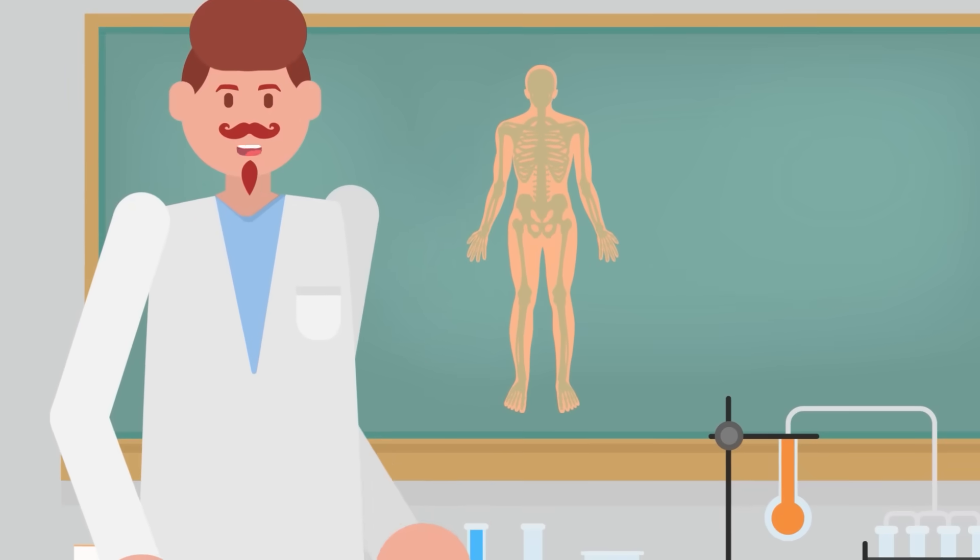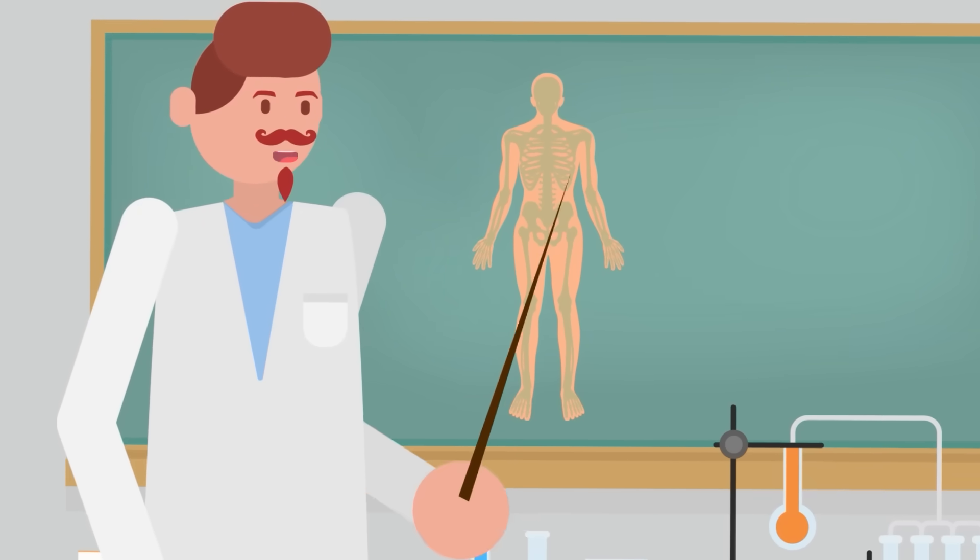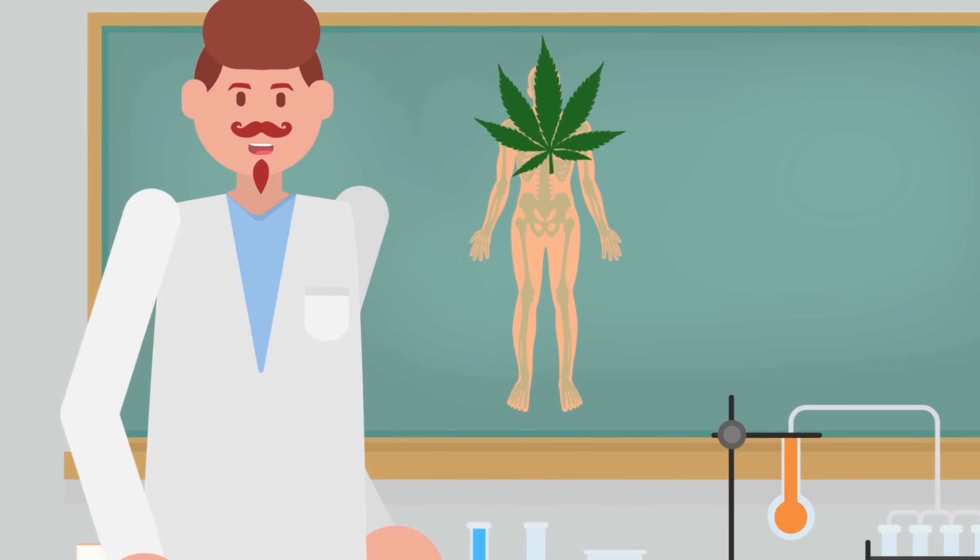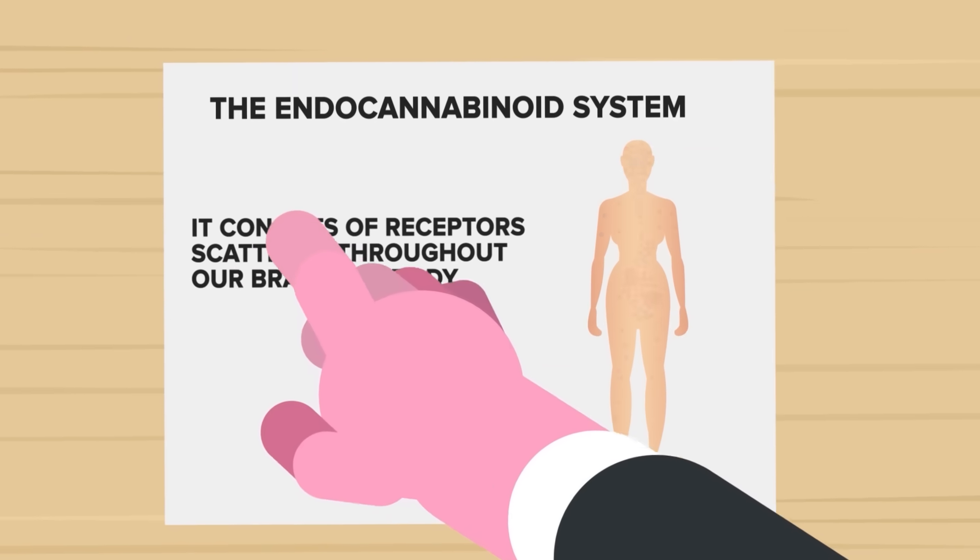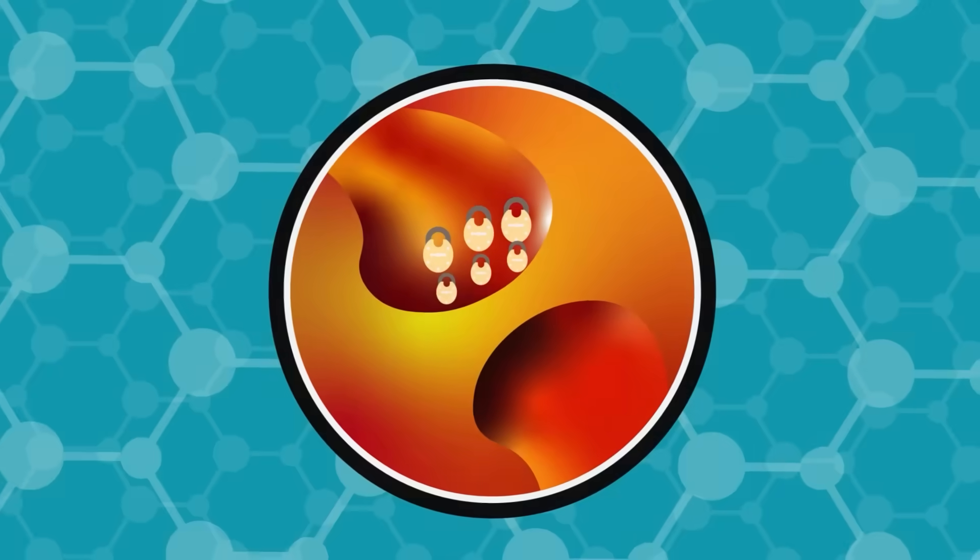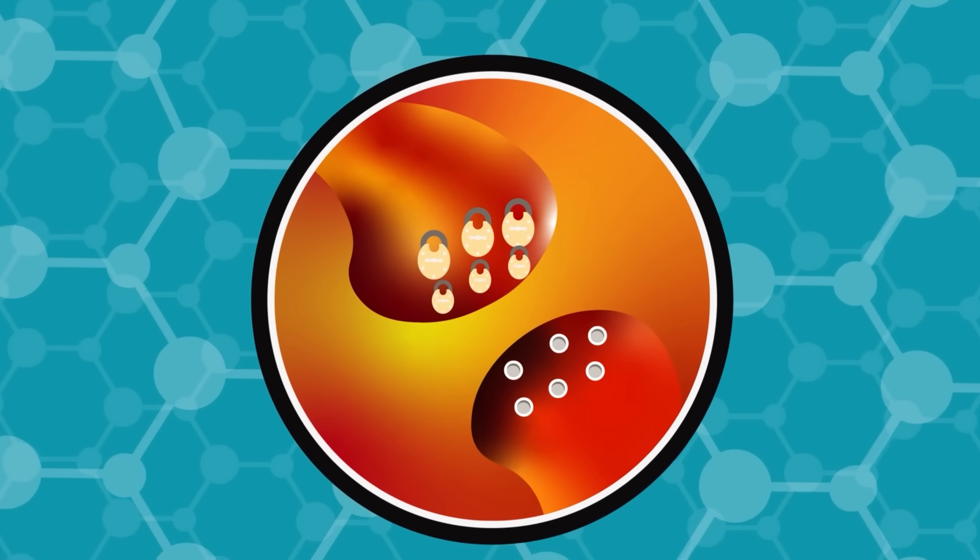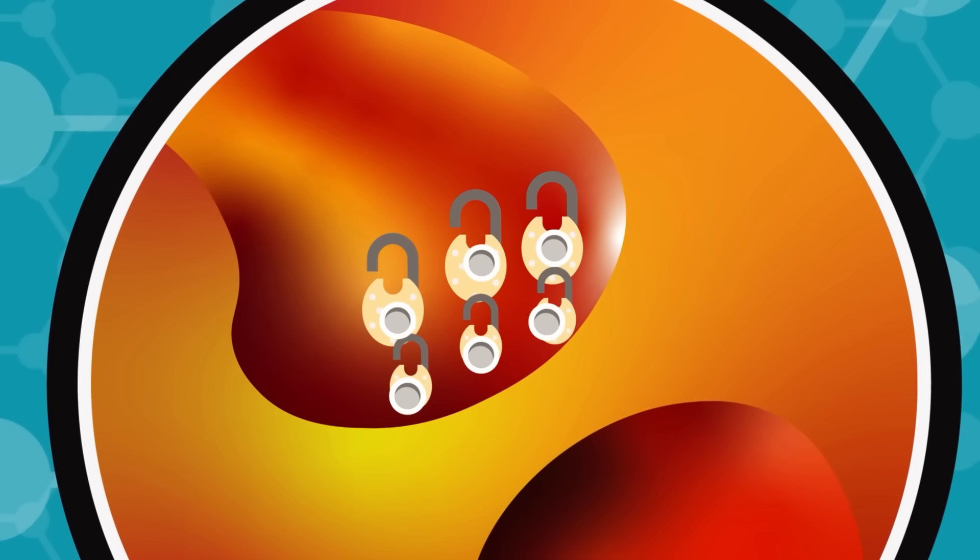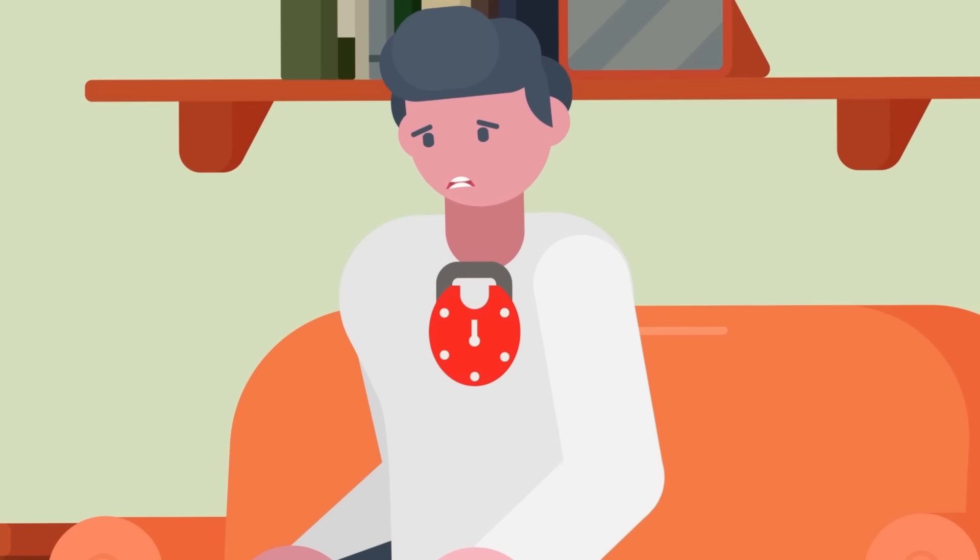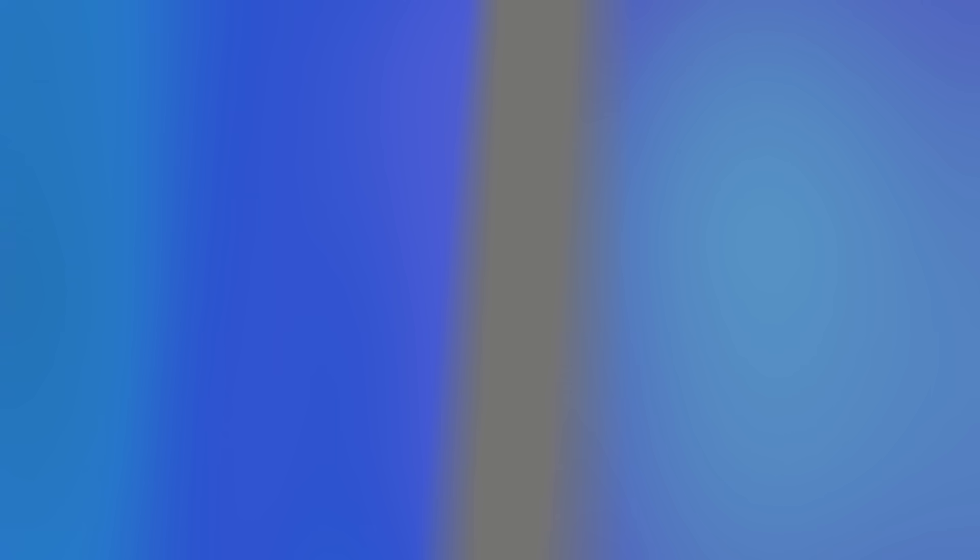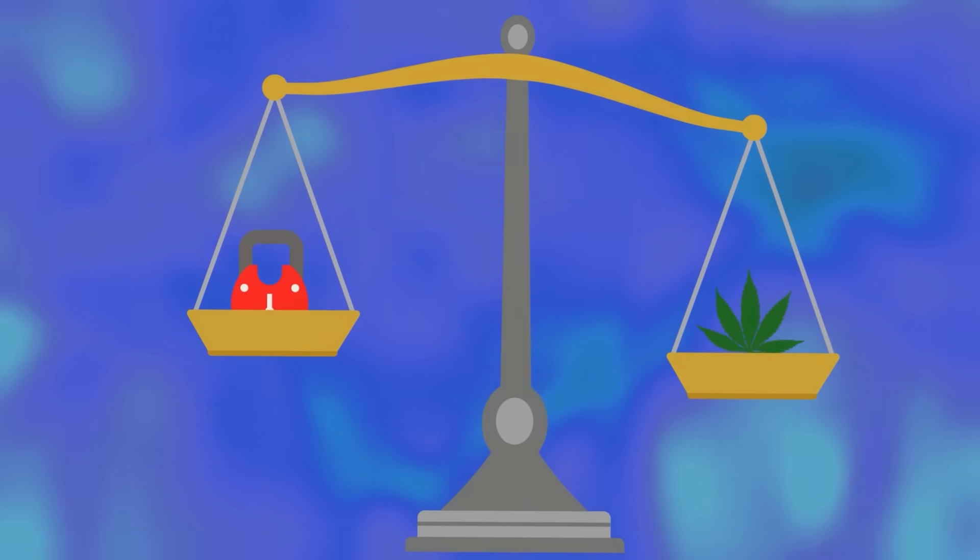First thing first, it might sound surprising, but our bodies naturally have a whole system designed to interact with substances similar to THC. It's called the endocannabinoid system, and it's made up of receptors scattered throughout our brains and bodies. Think of these receptors like tiny locks, and our body's own natural cannabinoids, called endocannabinoids, as the key. This system plays a vital role in regulating all sorts of functions, from mood and appetite to sleep and memory.